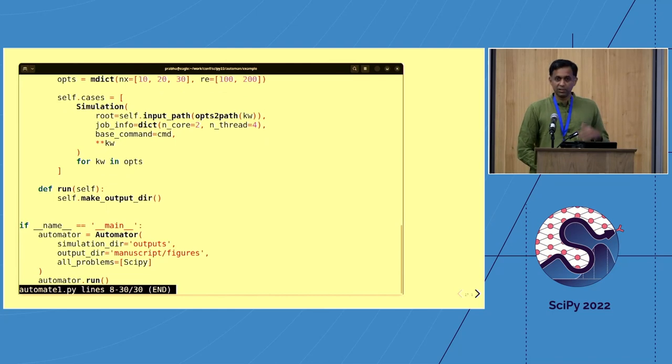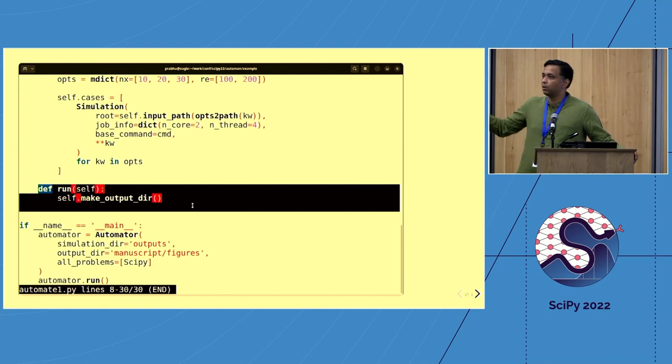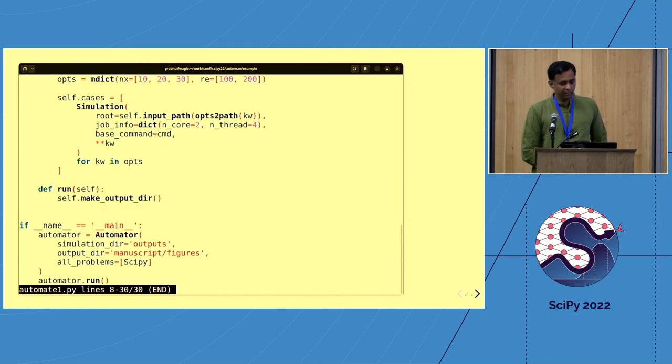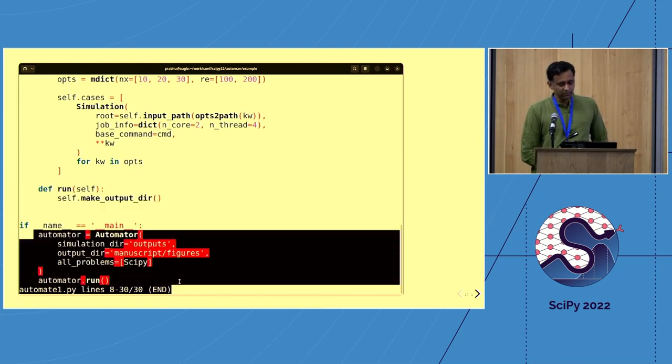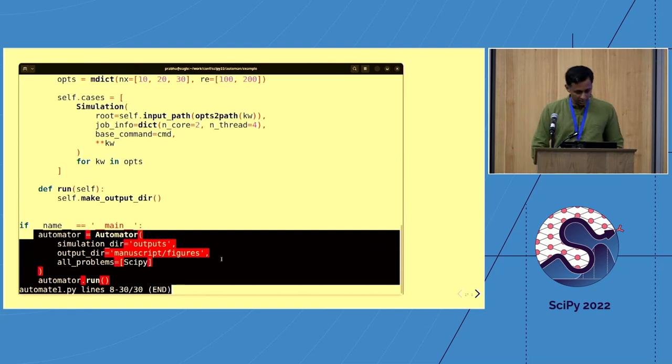And then after this job is finished, it will run this code. And right now, all it does is it makes an output directory. So there are no figures being generated yet. I just want to show you how you can just set up these simulations. And then finally, we have an automator, which is given the set of output directories, the set of manuscript output, and the set of problems that you want to solve. It's a list of problem classes. And then you run it, and that's it.